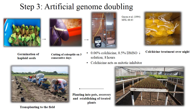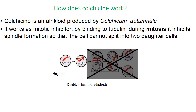Overnight colchicine treatment is given in the next step. Then planting into pots, recovery and establishing of treated plants. Based on that, the double haploid plants or small seedlings obtained from this technique are transplanted to the field. The work of colchicine: it is an alkaloid produced by Colchicum autumnale. It works as a mitotic inhibitor by binding to tubulin during mitosis, inhibiting spindle formation so that the cell cannot split into two daughter cells — keeping the haploid in doubled or diploid form, i.e., doubled haploid.